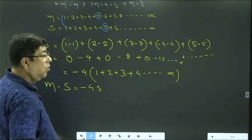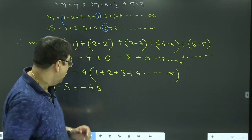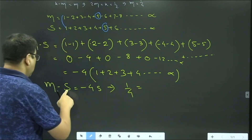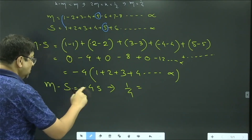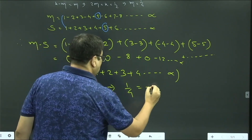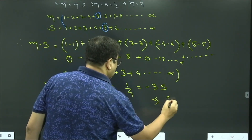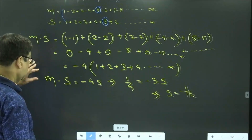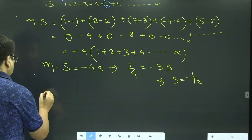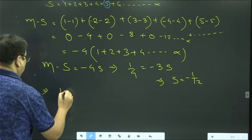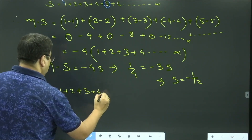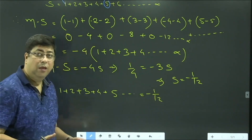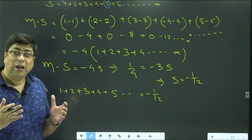Since M = 1/4, we have 1/4 = S - 4S = -3S. Therefore S = -1/12. So 1 + 2 + 3 + 4 + ... = -1/12. This is the paradox, and it is totally astonishing — no one can believe this.